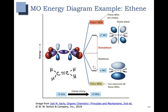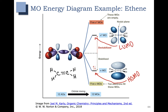The pi bonding molecular orbital is the highest in energy that has electrons, so it is the HOMO — the highest occupied molecular orbital. All of our antibonding molecular orbitals are unfilled or unoccupied, and the lowest in energy becomes our LUMO, or lowest unoccupied molecular orbital.